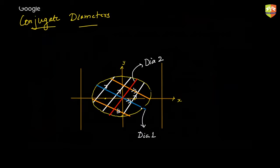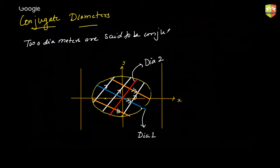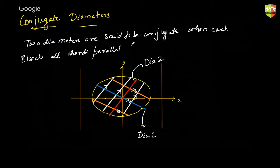Two diameters are said to be conjugate when each bisects the chords parallel to the other. Please do not take the angle between them to be 90 degrees — this angle is not 90 degrees. It would become 90 degrees only if this ellipse were a circle.